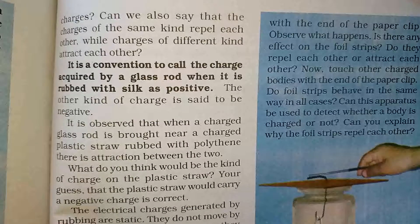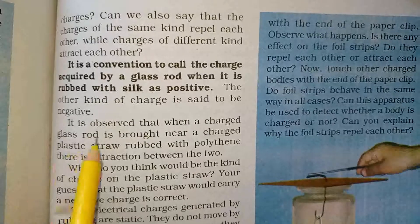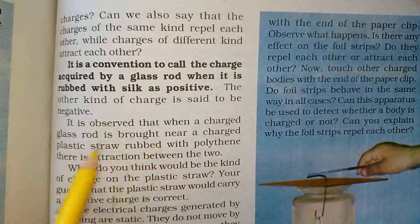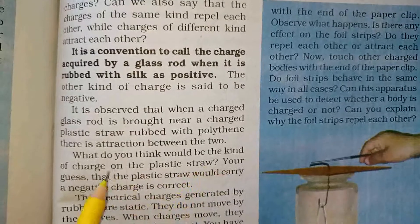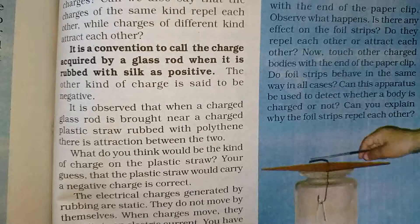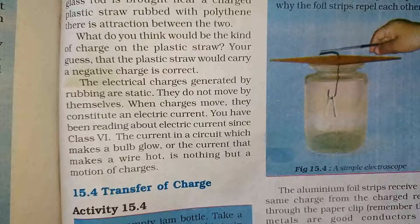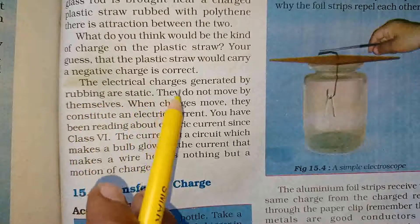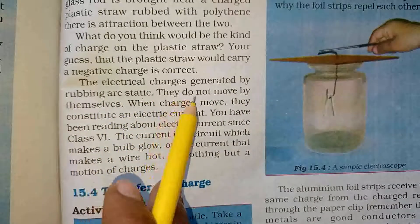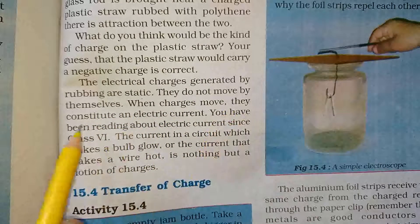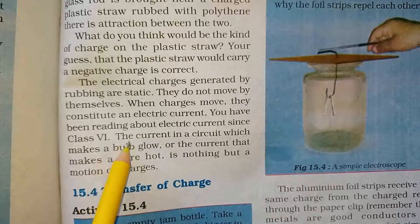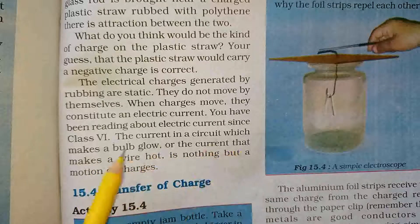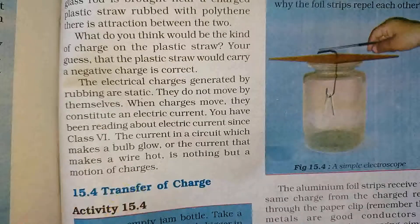So charges are of two types: positive and negative. It is observed that when a charged glass rod is brought near a charged plastic straw rubbed with polythene, there is attraction between the two. The plastic straw rubbed with polythene carries a negative charge. The electrical charges generated by rubbing are static — they do not move by themselves. When charges move, they constitute an electric current.